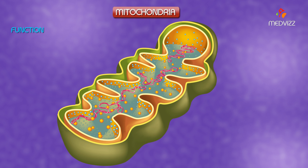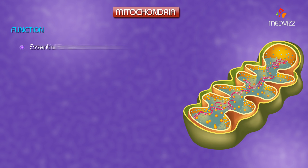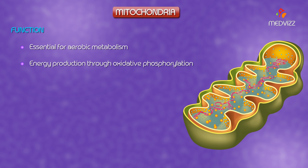Mitochondria are intracellular organelles that are essential for aerobic metabolism and energy production through oxidative phosphorylation, which is accomplished by the respiratory chain. However, mitochondria are not only the ATP-producing powerhouses of the cell.